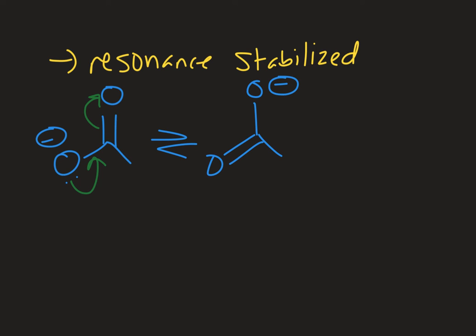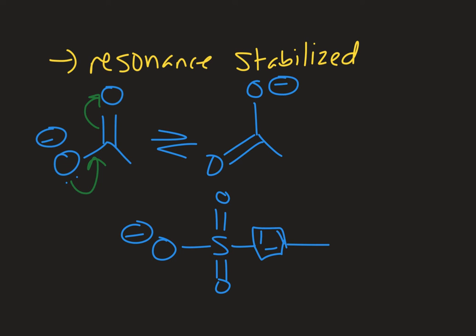Another common good leaving group that has resonance stabilization is OTs. If you're not familiar with OTs, I have another video on what exactly it is, why you would use it, and how you convert to a leaving group of OTs. Here's the O part, and then the Ts is this whole part here. This is just another resonance-stabilized molecule — the negative charge on the oxygen can be shared between the other two oxygens as well, making it a very stable molecule upon leaving.